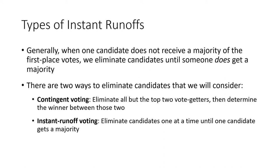Often the winner of a runoff election is called into question because it's not the same group of voters, and you're always wondering whether that person would have won on the original date. So instant runoffs are meant to try to solve that problem: when one candidate doesn't receive a majority, we eliminate candidates until someone does get a majority.